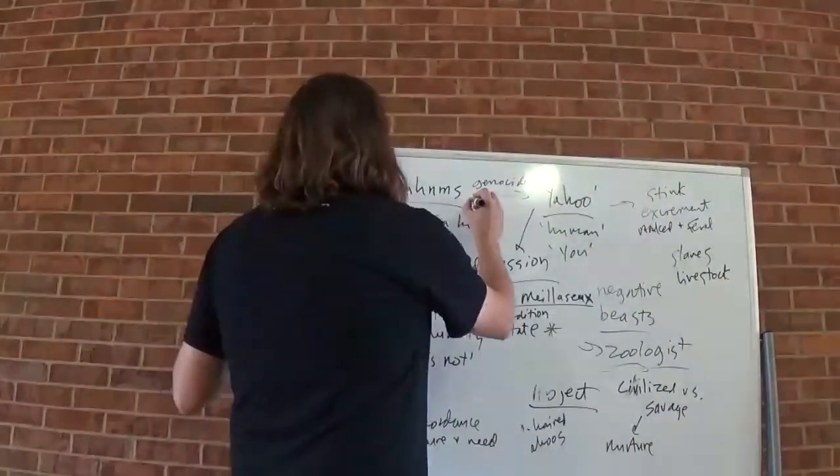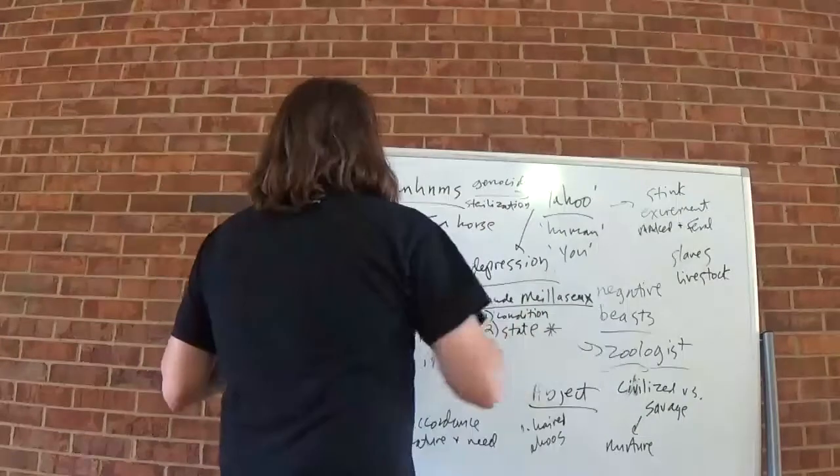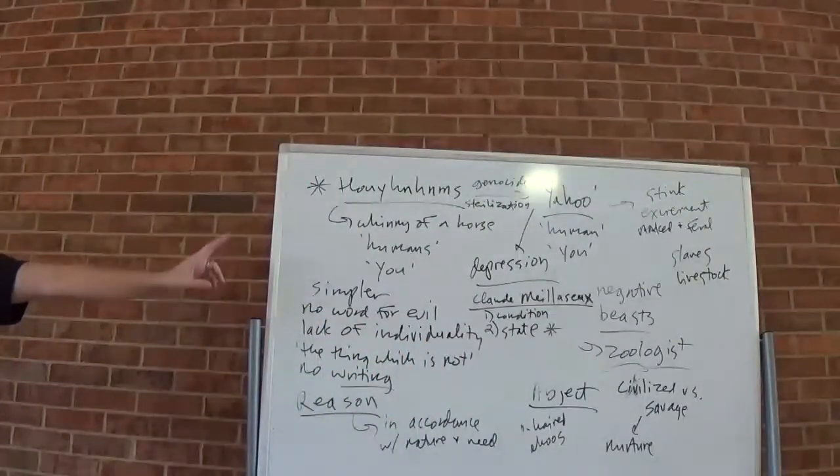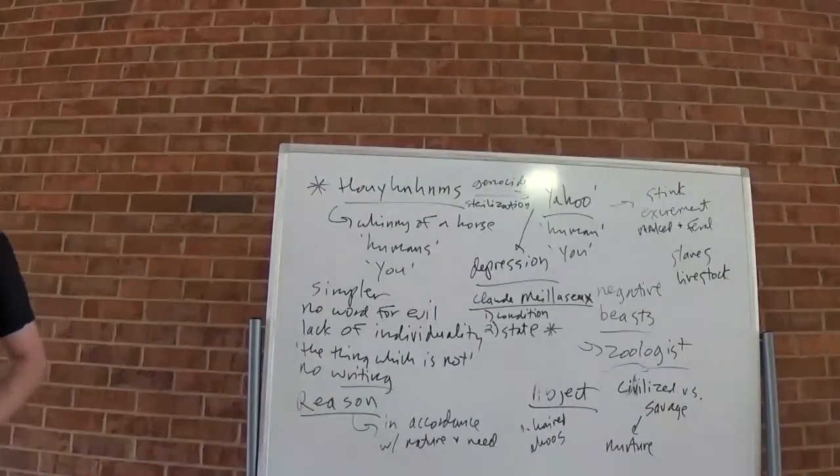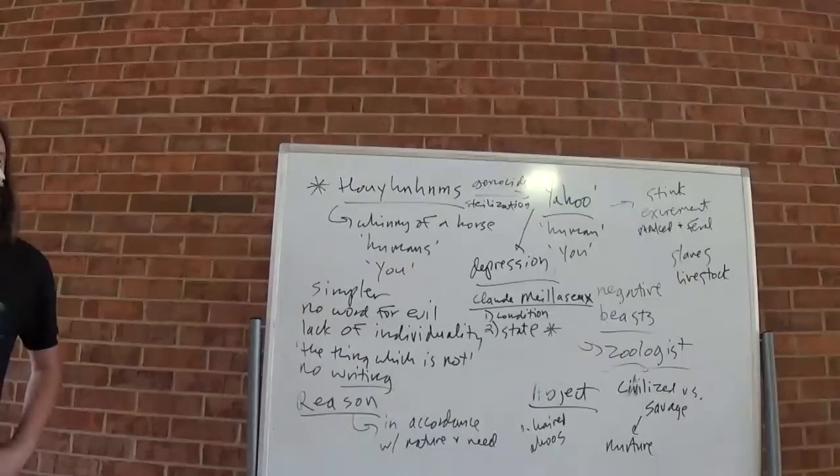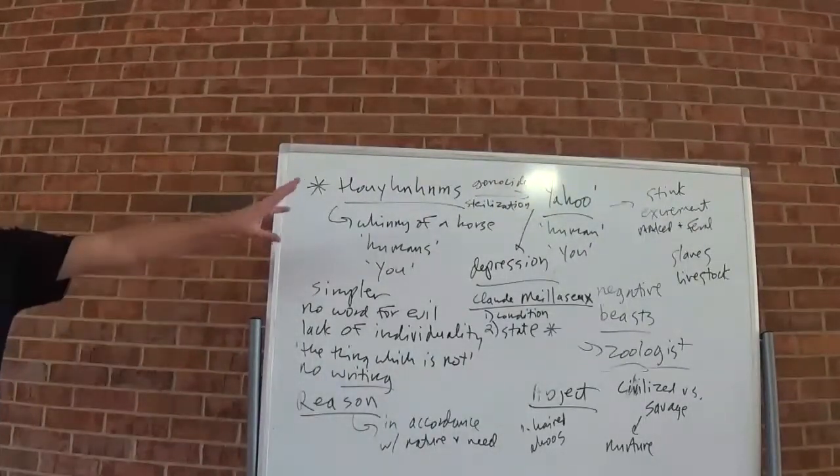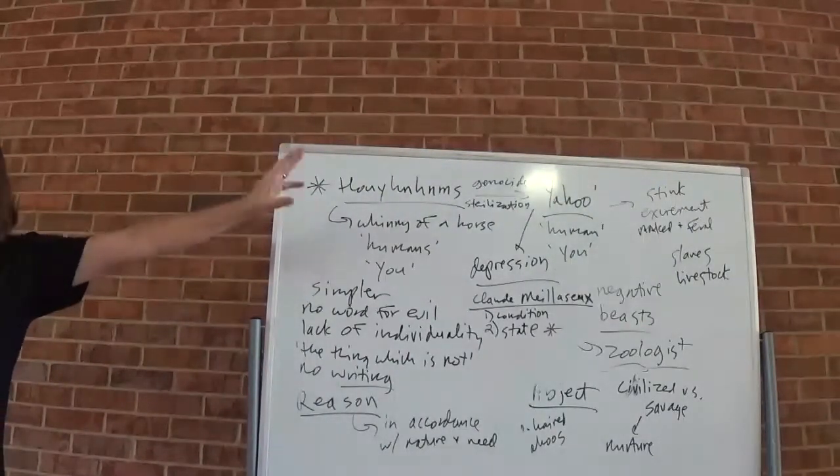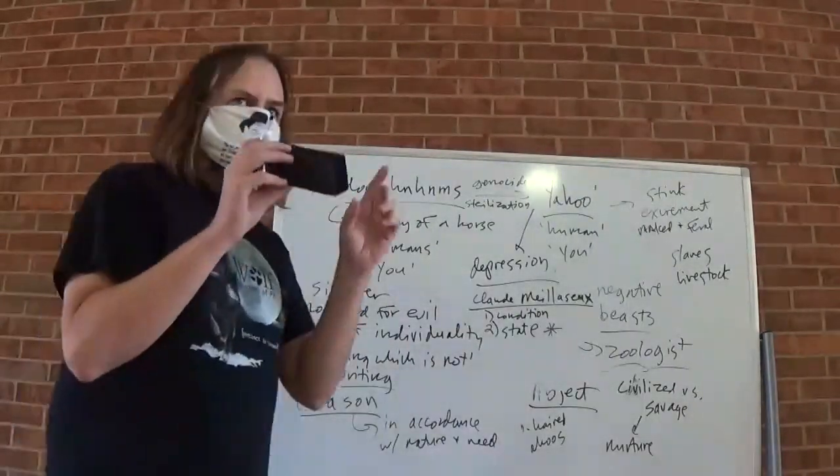There's the one representative of the assembly who argues that the Houyhnhnms should just go and just kill all the Yahoos right now. And then what was the other idea that Gulliver's master horse got from Gulliver? Yeah, sterilize them. And that way they just won't reproduce and they'll die out in a generation or two. Yeah, replace them with donkeys instead. Now what's interesting with the Houyhnhnms replacing these human-like creatures with donkeys? Slavery. It is slavery. It's even closer to human slavery. Because the donkey is much more physically similar to the Houyhnhnm than the Yahoo is.